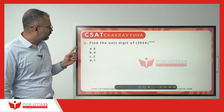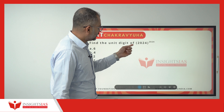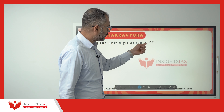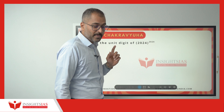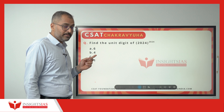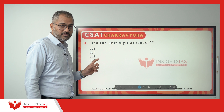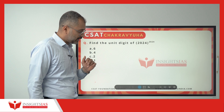The question says: find the unit digit of 2024 to the power of 2024. If you are thinking that this is a very big number — no. This is a very simple and easy question to solve.